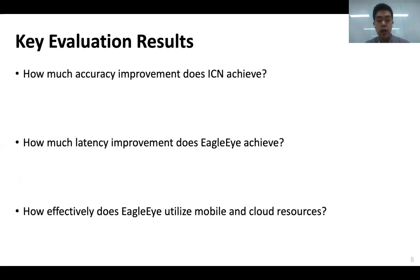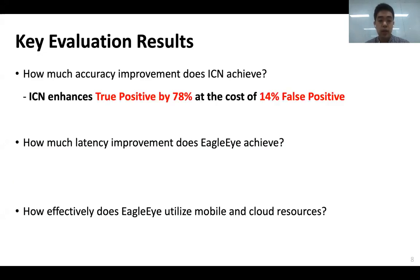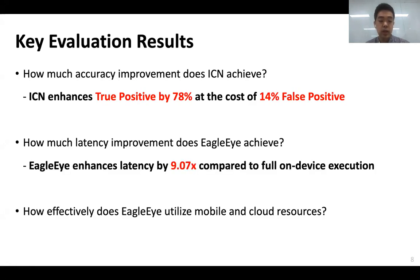Our key evaluation results are summarized as follows. First, ICN enhances the true positive by 78%, at the cost of a marginal 14% increase in the false positive. Second, EagleEye enhances the end-to-end latency by nine times compared to full-on-device execution.